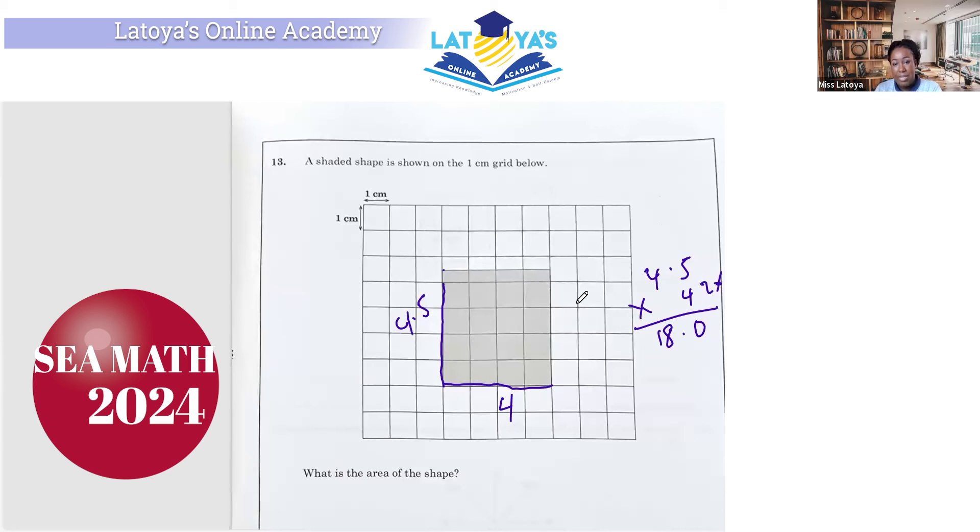Some of you all might have used this calculation, or some of you all might have just counted it. So this is going to be 1, 2, 3, 4, 5, 6, 7, 8, 9, 10, 11, 12, 13, 14, 15, 16. Two halves will be 17. Another half, this will be 18. So whether you counted it or whether you looked at it via calculations, you'll still get the answer to be 18 centimeters square.